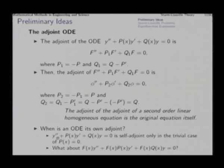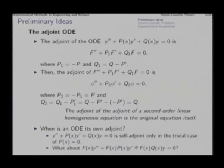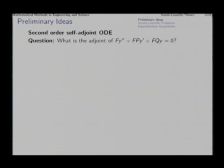But what about f times the equation — that is f y double prime plus f p y prime plus f q y equal to 0? Under what condition does this turn out to be self-adjoint? We find the adjoint of this multiplied equation, and then ask under what condition the adjoint turns out to be the same differential equation.